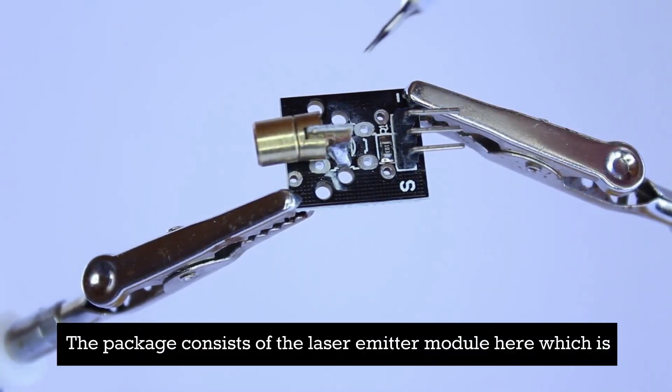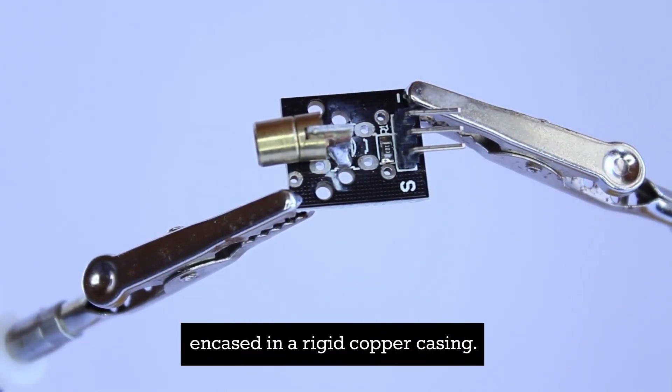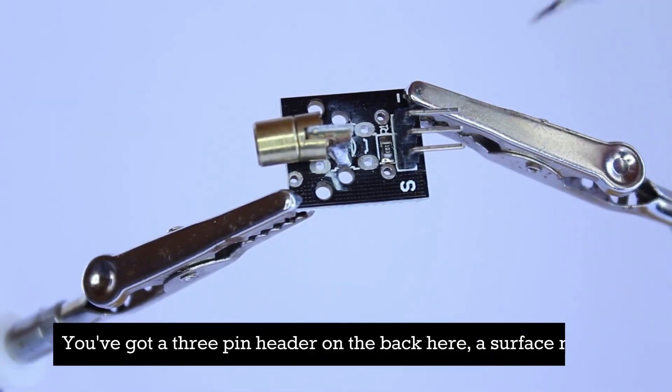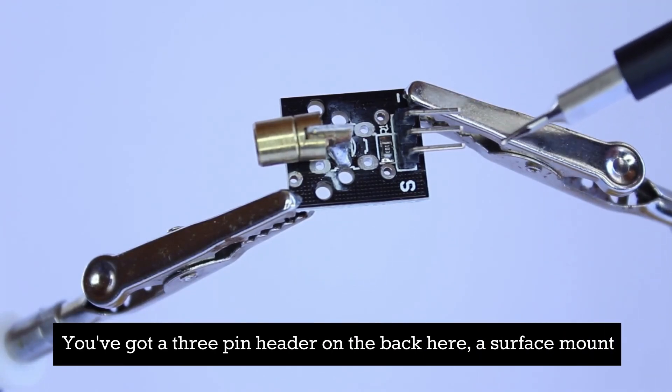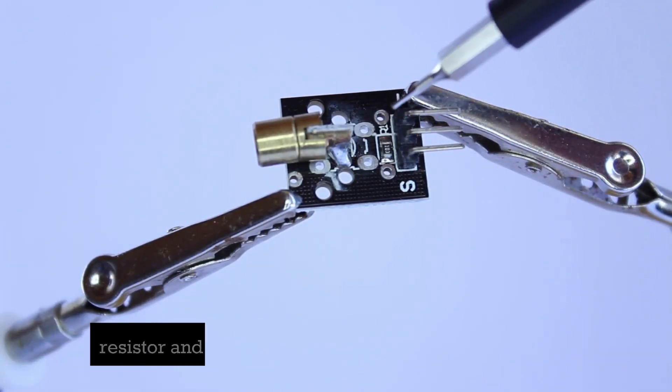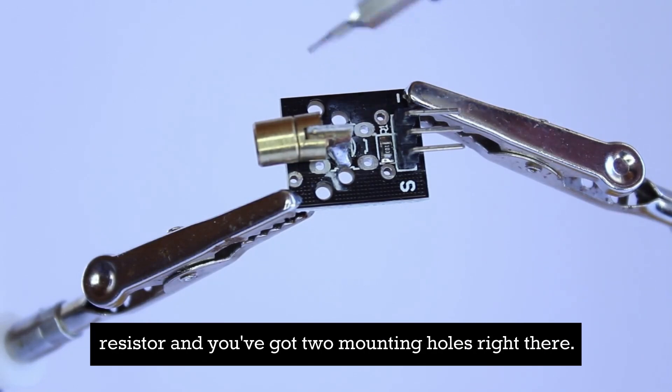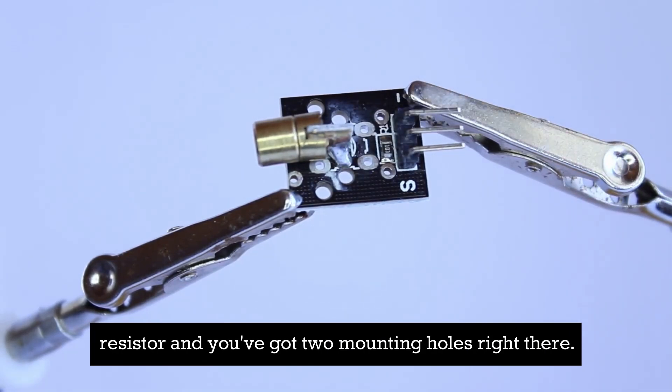The package consists of the laser emitter module here, which is encased in a rigid copper casing. You've got a 3-pin header on the back here, a surface mount resistor, and you've got two mounting holes right there.